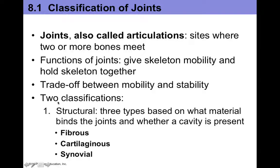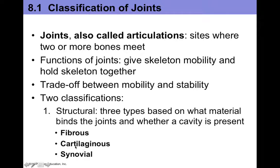There are two classifications of joints: structural and functional. The structural classifications include fibrous, cartilaginous, and synovial — this refers to what they're made of. Fibrous joints are made of fibrous tissue like dense regular connective tissue. Cartilaginous joints are made of cartilage. Synovial joints are the movable joints made of a synovial membrane, which is a lubrication membrane.